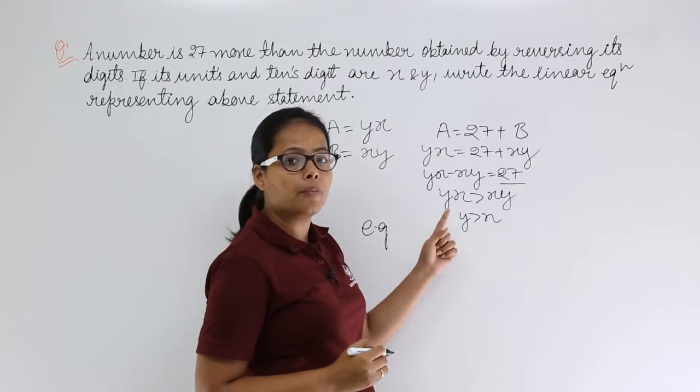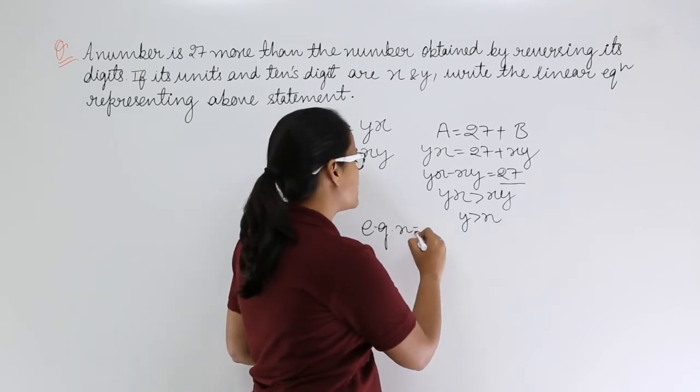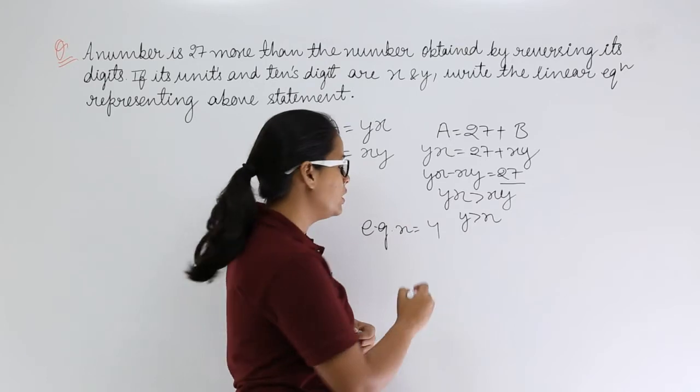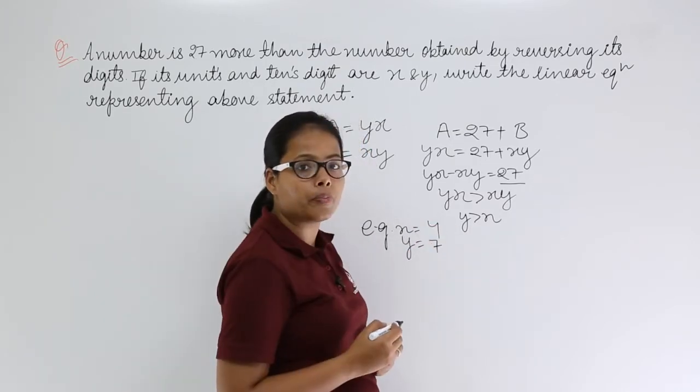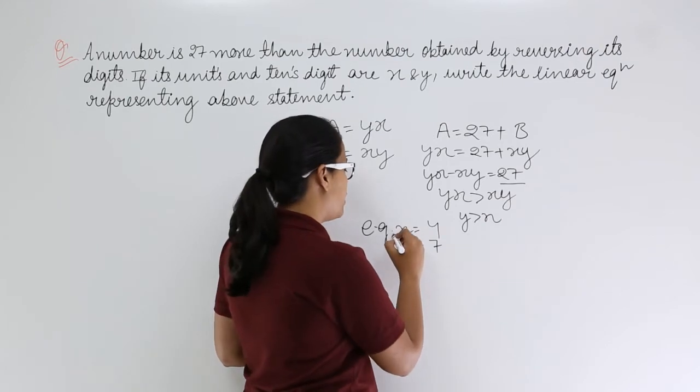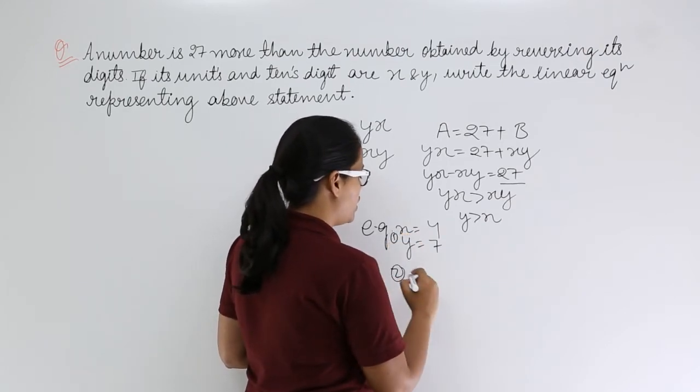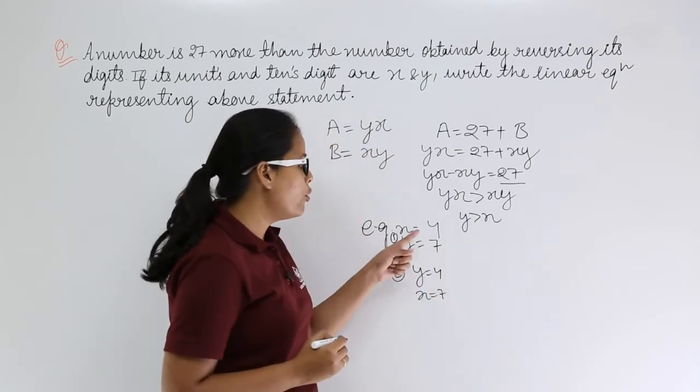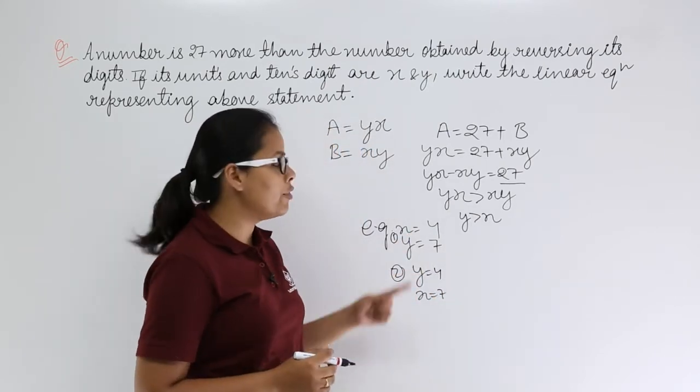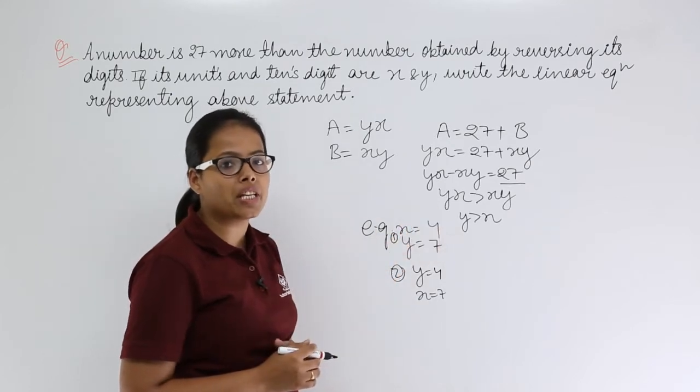Let's do this for an example. Let's take an example here. Let's suppose value for x is equal to 4, and let's suppose y is equal to 7 here. And then again take a condition where y is equal to 4 and x is equal to 7.